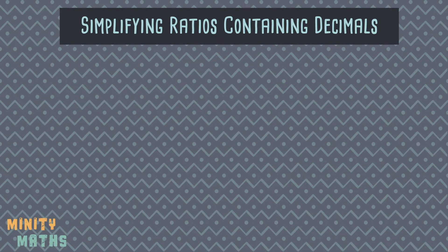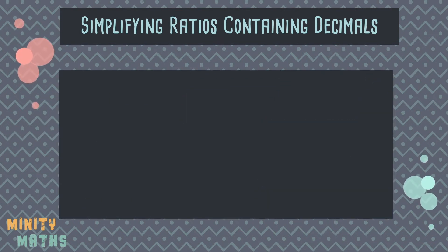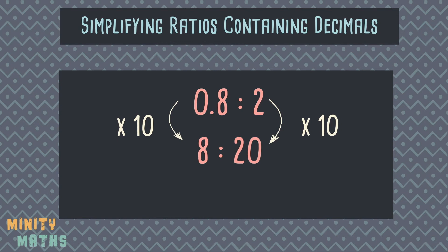Now, what if we have a ratio containing some decimal numbers? How can we simplify this and make it easier to read? Well, firstly, we can get rid of the decimal by multiplying both sides by a multiple of 10. In this case, we can multiply by 10 to turn 0.8 into a whole number. Now simplify the ratio as usual.